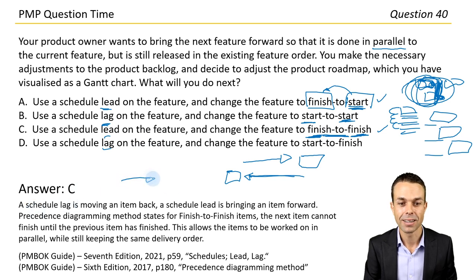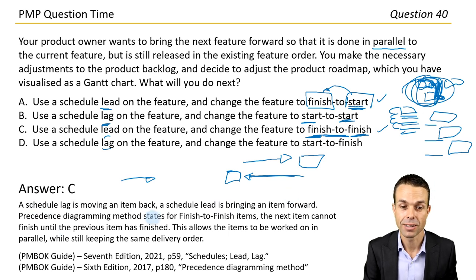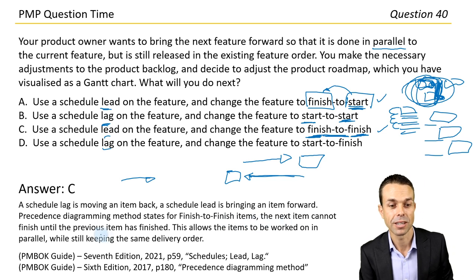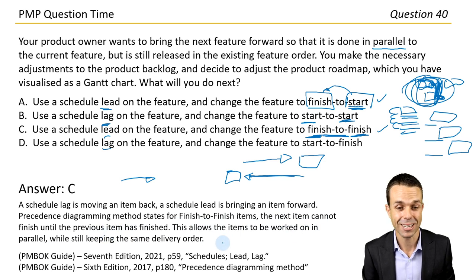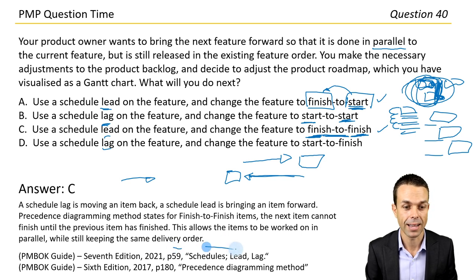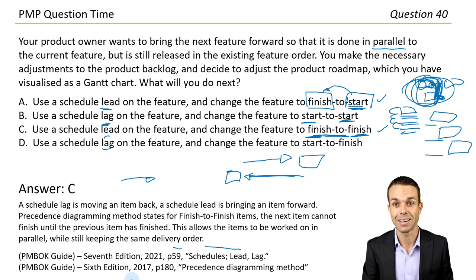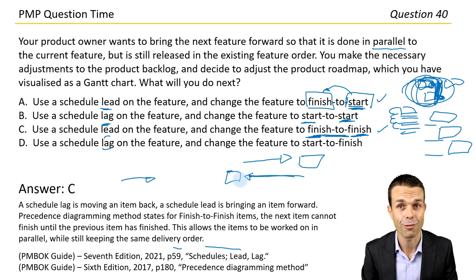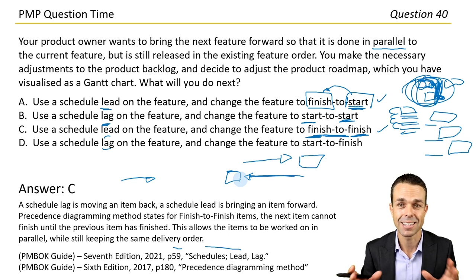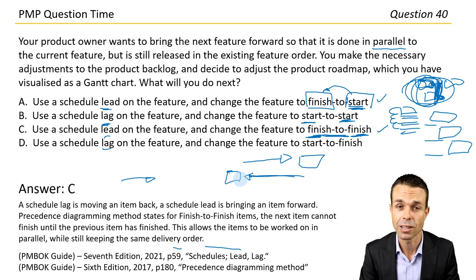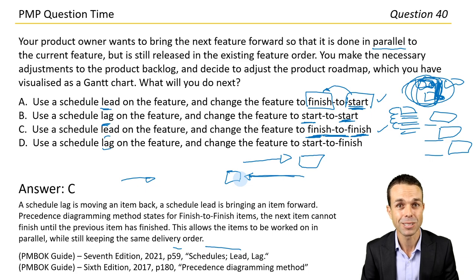Schedule lag is moving an item back. Schedule lead is bringing an item forward. The precedence diagramming method states for finish-to-finish items: the next item cannot finish until the previous item has finished — this allows items to be worked on in parallel while still keeping the same delivery order. Page 59 on schedule lead and lag, and page 180 on the precedence diagramming method in the PMBOK Guide. You and I have gotten through this section of PMP questions on the PMBOK Guide 7th edition. Keep practicing, keep learning a little bit every single day, and I know you can pass the PMP exam. I hope to see you in the next video.